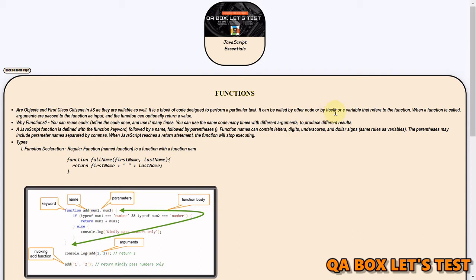It can be called by other code or by itself, meaning it can invoke itself, or it can be invoked by the caller. Why do we need functions? So that we can reuse the code. You define the code once and use it as many times as you want.